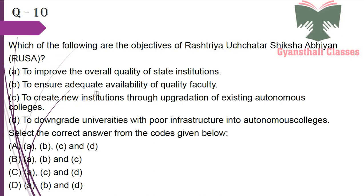Which of the following are the objectives of Rashtriya Uchchatar Shiksha Abhiyan (RUSA)? To improve the overall quality of state institutions — yes; to ensure adequate availability of quality faculty — yes; to create new institutions through upgradation of existing autonomous colleges — yes; to downgrade universities with poor infrastructure into autonomous colleges — no. So the answer is A, B and C only.